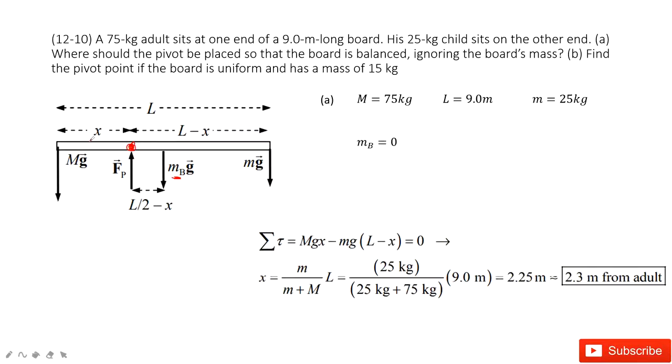So we have Mgx on the left-hand side equal to mg(L minus x) on the right-hand side. Then we can solve to get the function for x, and then input the known quantities. The answer is 2.3 meters.